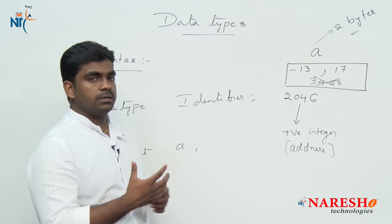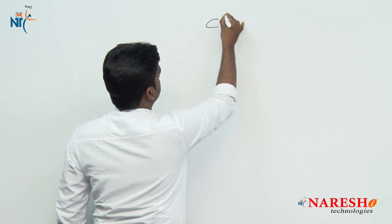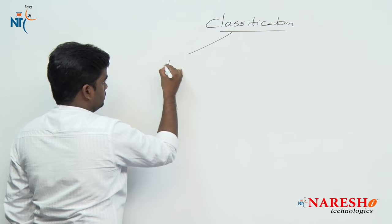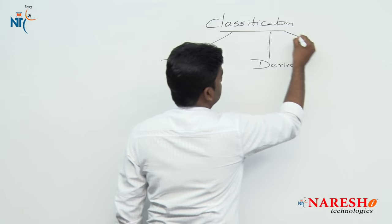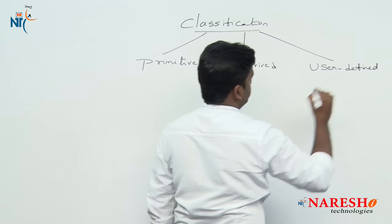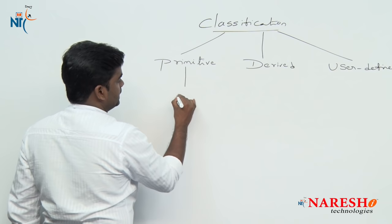In C language, data types are classified into three types. First, primitive data types. Second, derived data types. Third, user-defined data types. Primitive data types include integer, character, float, and void.